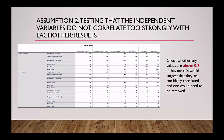You can also use the same Correlations box to check for assumption two — that is whether the independent variables correlate too strongly with each other. You would look across at the Pearson's correlation row and at all the different correlations. For example, length of baby and gestational age is 0.651. You want to see whether any of these values are above 0.7; if they are, this would suggest that they are too highly correlated and one would need to be removed. However, as you can see here, none of our values exceed 0.7, so our regression is fine to run as it is.